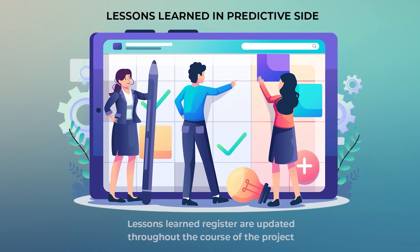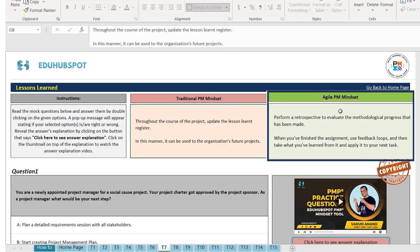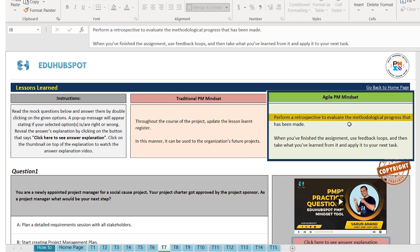You want to make sure you update the lessons learned register throughout the project. On the Agile side, you don't do a lessons learned meeting — you do a retrospective meeting. So you perform a retrospective to evaluate the methodological progress that has been made. It's basically the same thing, but you do it in a much more structured way on the Agile side, and the technical term for that is retrospective.